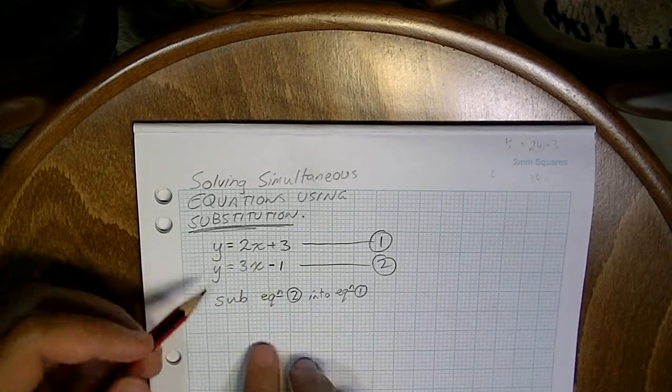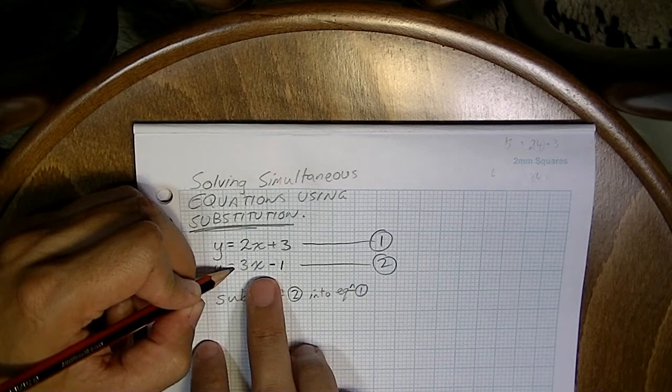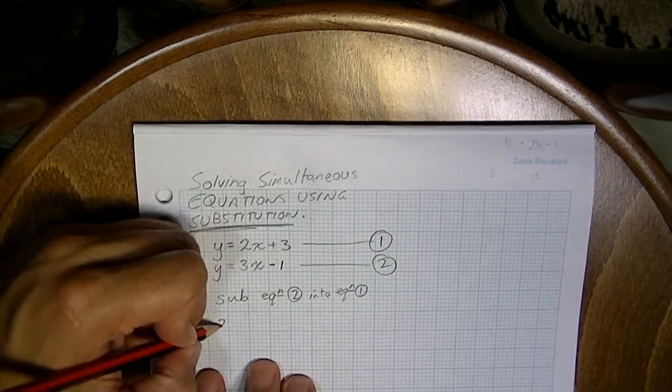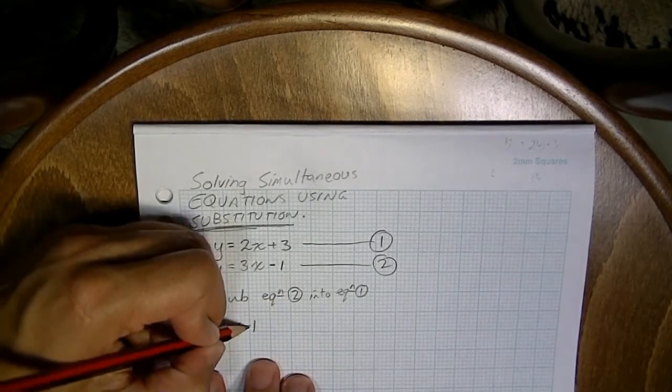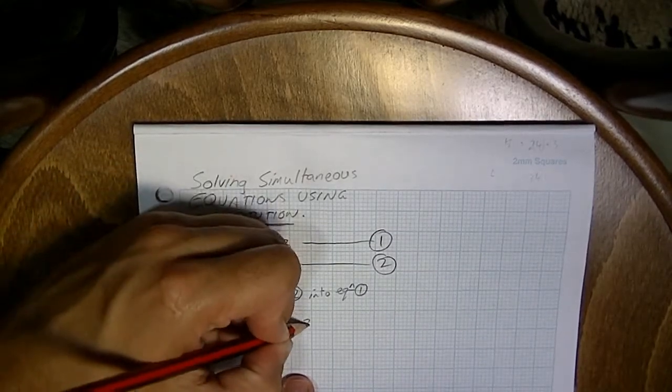So where I see the y, I'm going to substitute in the second equation. It's going to end up looking like this. 3x minus 1 equals 2x plus 3.